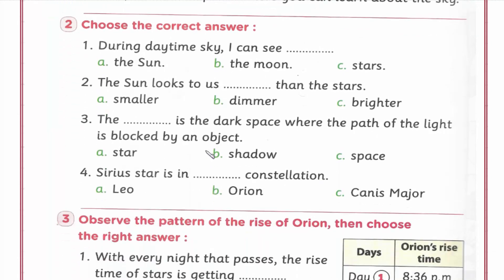Question number two, choose the correct answer. During the daytime sky, I can see - بالنهار في السماء ممكن نشوف ايه؟ ممكن نشوف the sun. Not the moon, not stars. During the daytime we can see the sun.